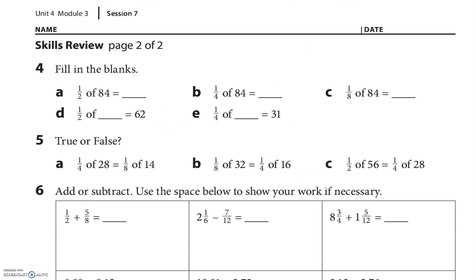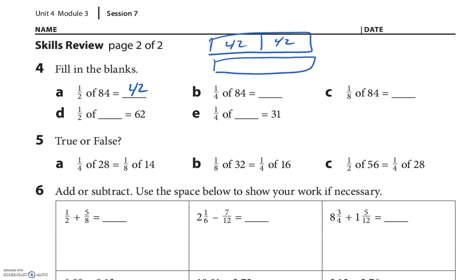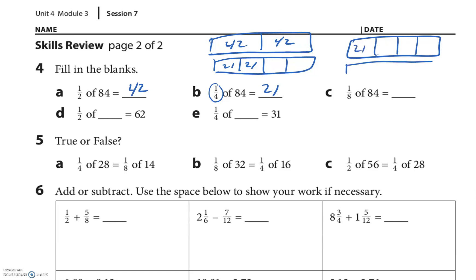Some skill review — I'm going to draw some pictures. One half of 84: half of 80 is 40 and half of 4 is 2, so that's 42. If one half of 84 is 42, then I can figure out one fourth by splitting half and half — half of 42 is 21. So one fourth of 84 is 21. One eighth: that's half of a fourth. Half of 21 — half of 20 is 10, half of 1 is 0.5 — so 10.5.